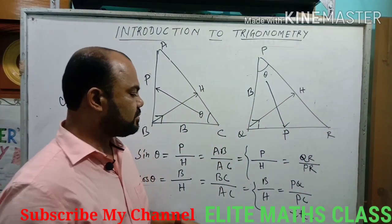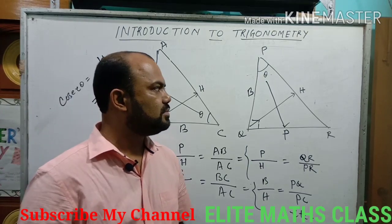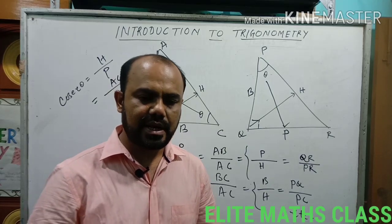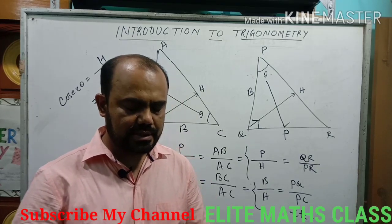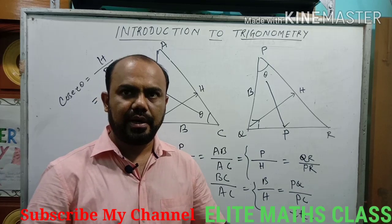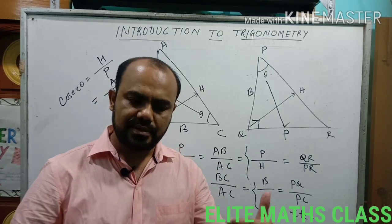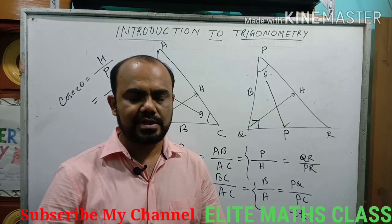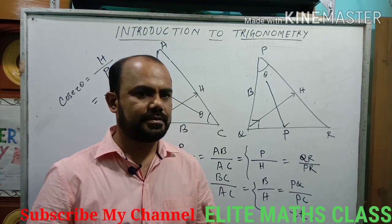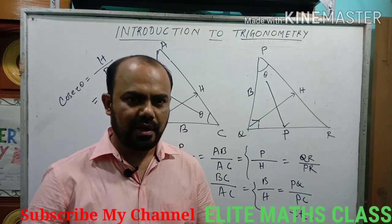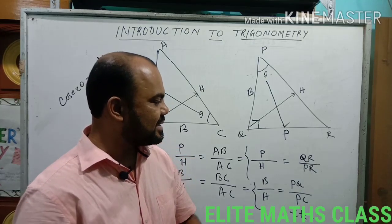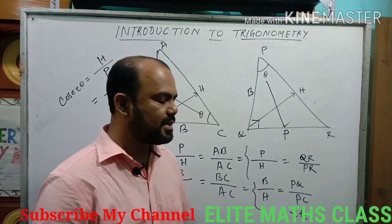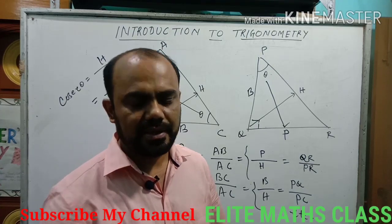So the first introduction to trigonometry: it is defined on a right angle triangle, and there are 6 trigonometrical ratios — basically 3, and the other 3 are reciprocals of the first three. Memorize the ratios sin, cos, tan, cosec, sec, and cot, and also the Pythagoras theorem. In the second video I will discuss the rest of the trigonometry syllabus for class 10. Thank you very much.